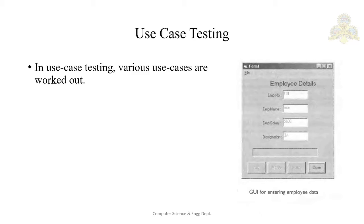If the employee makes a mistake, they click the modify button to modify the data, and the report is checked again. So the use case can be worked out for adding employee details, modifying an existing record, and deleting a record.